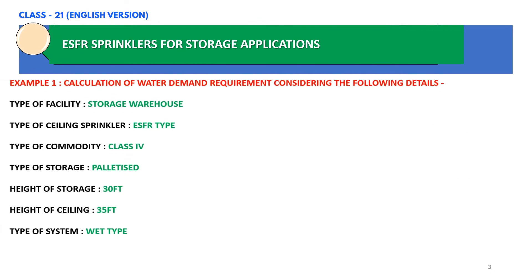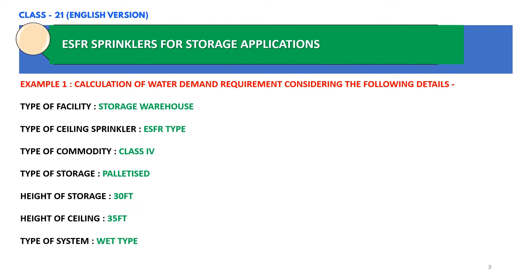Let us consider an example in order to calculate the water demand requirement using ESFR sprinklers. We are going to consider a storage warehouse where the type of ceiling sprinkler will be ESFR type. Commodity classification is Class 4, type of storage is palletized, height of storage is 30 feet, height of ceiling is 35 feet, and the type of system is a wet type system.